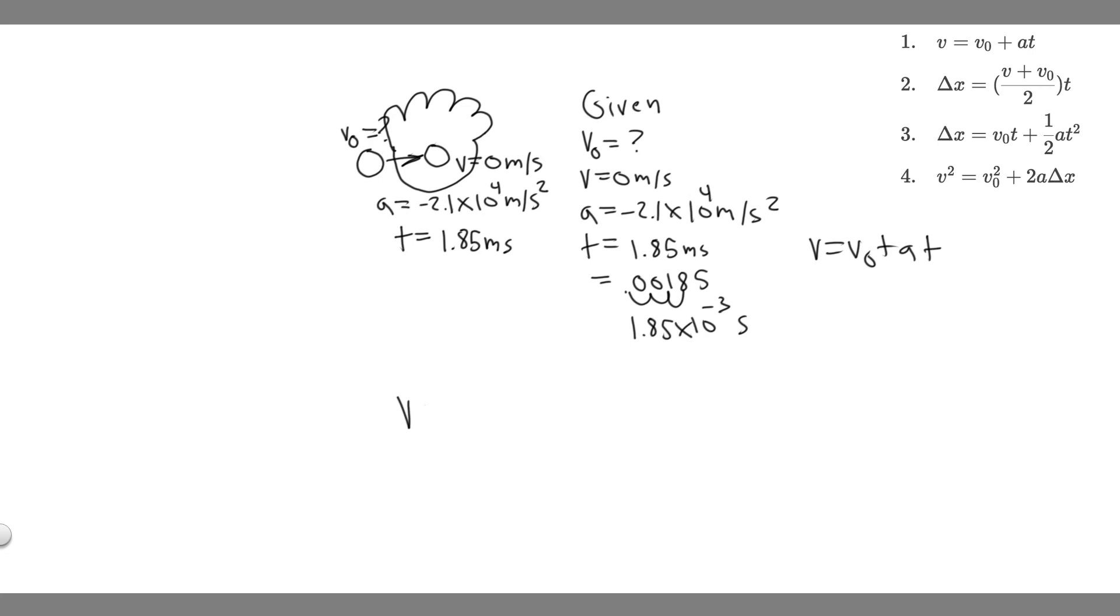So v equals v sub 0 plus a times t. V is 0. The final velocity equals the initial velocity, which is what we're solving for, plus the acceleration, which is minus 2.1 times 10 to the 4 times t. And t is 1.85 times 10 to the minus 3.